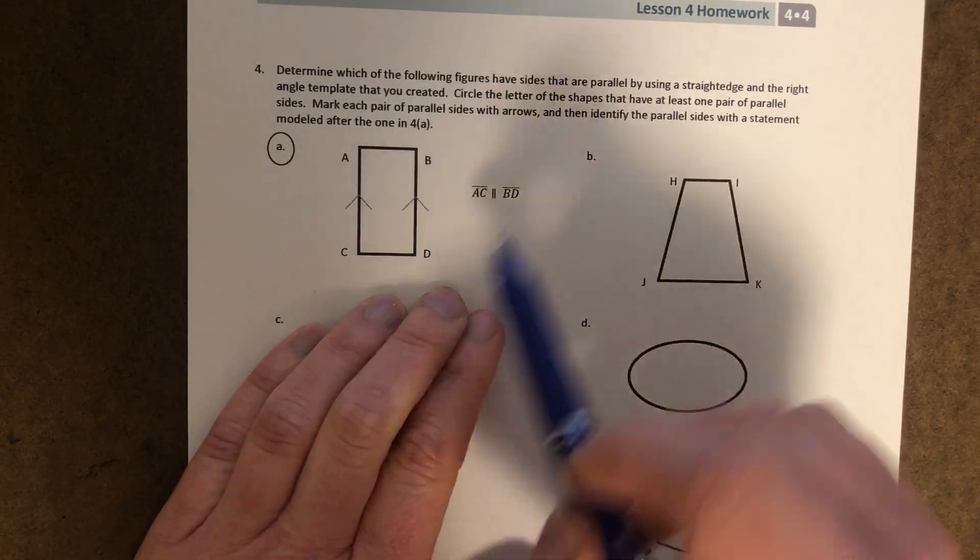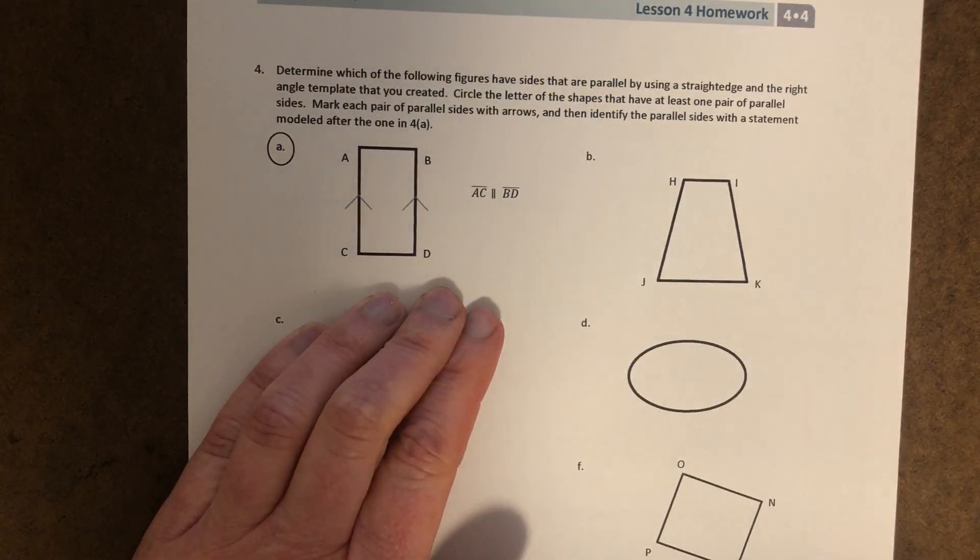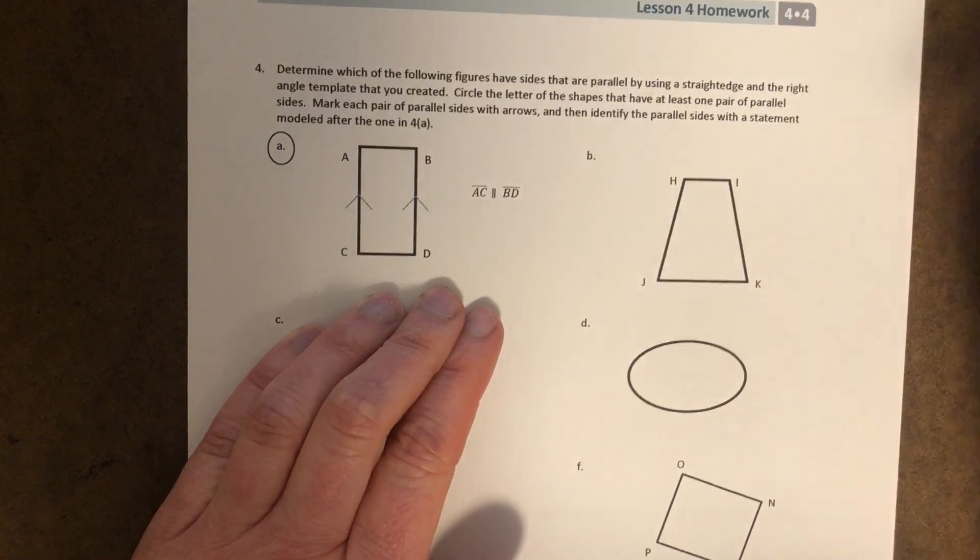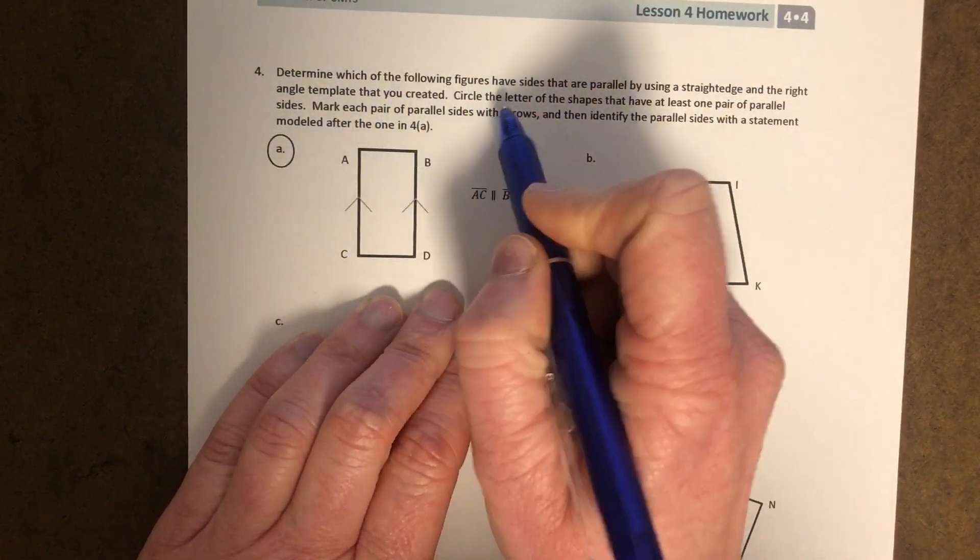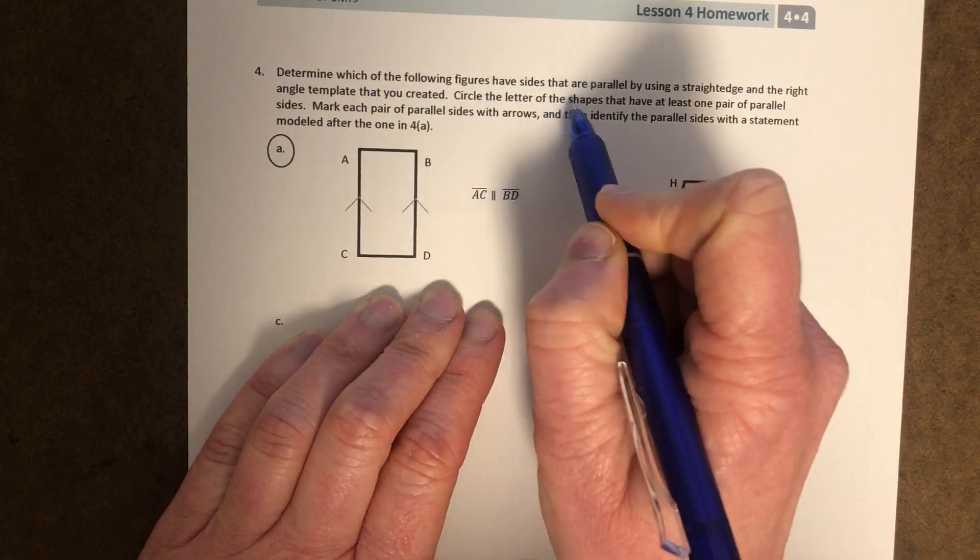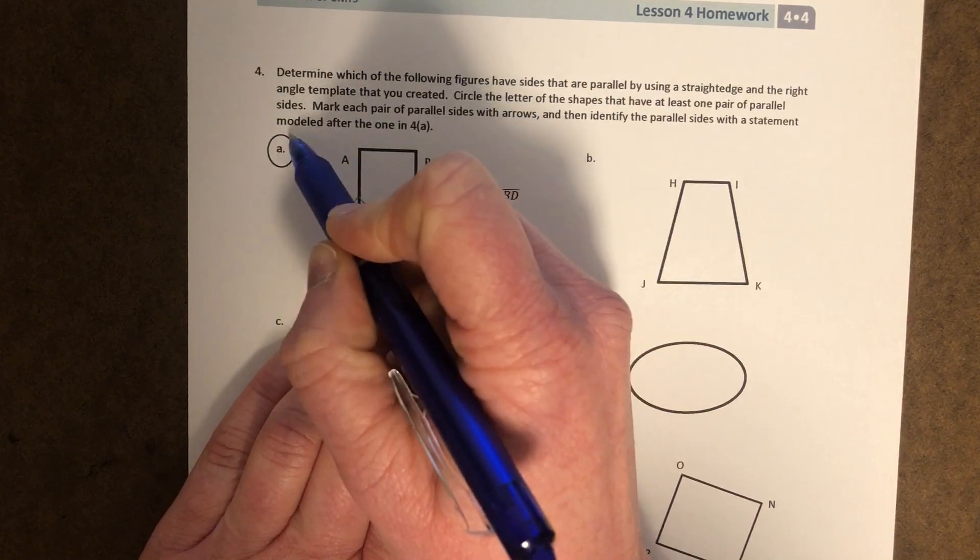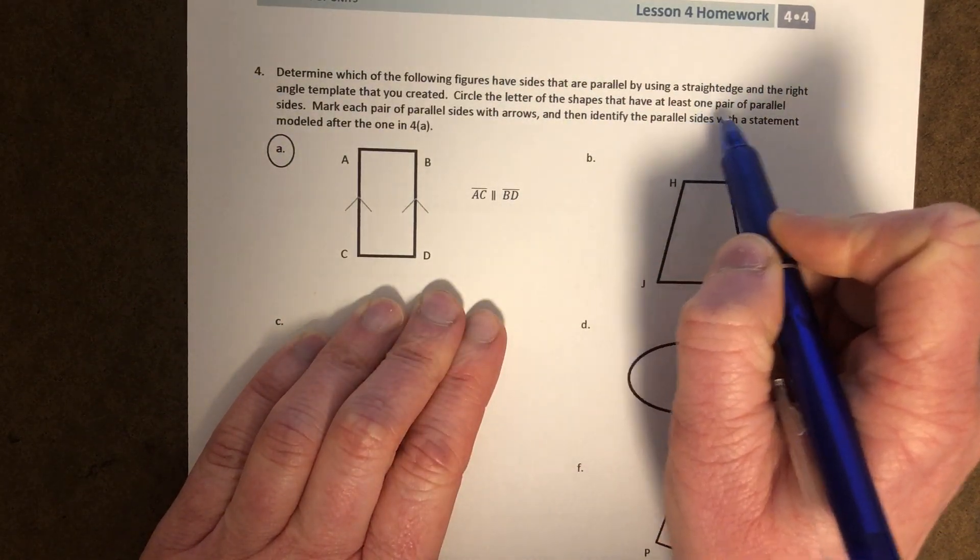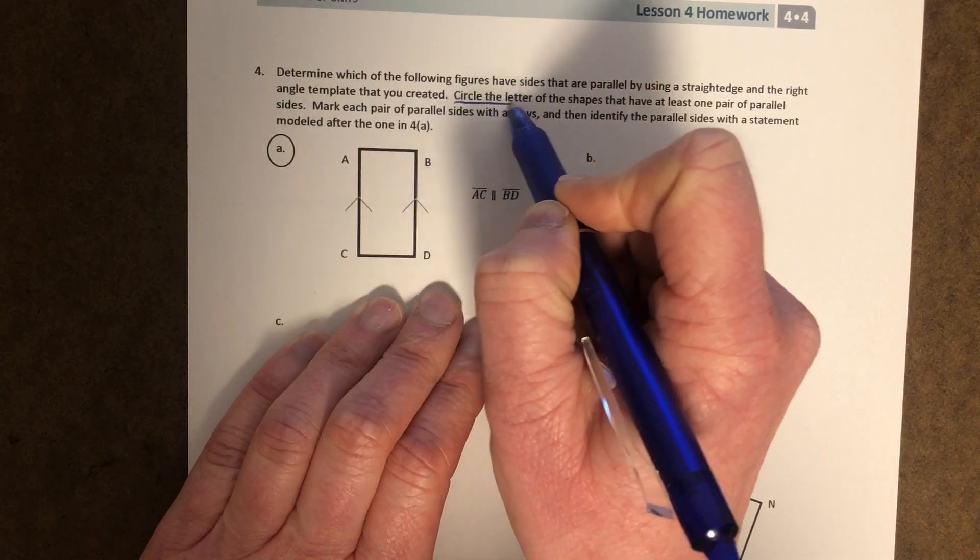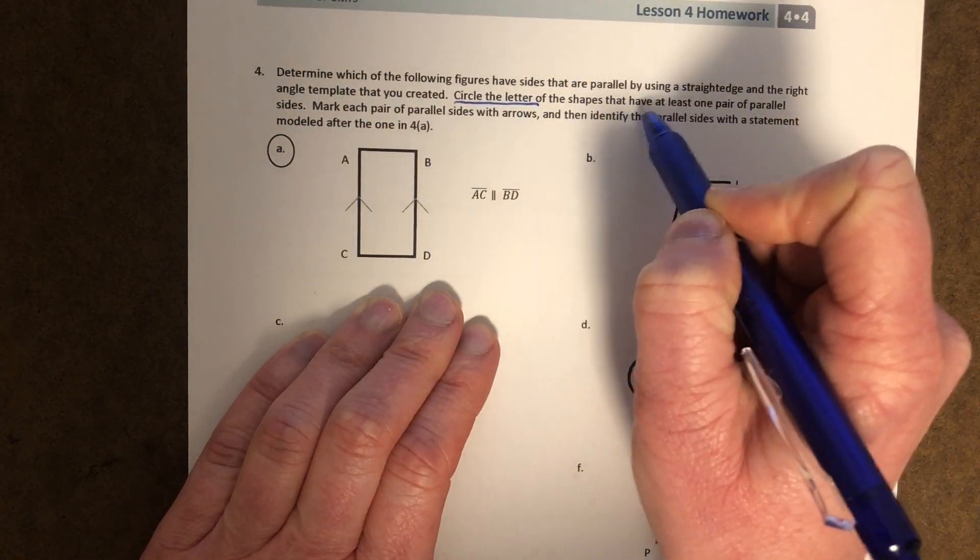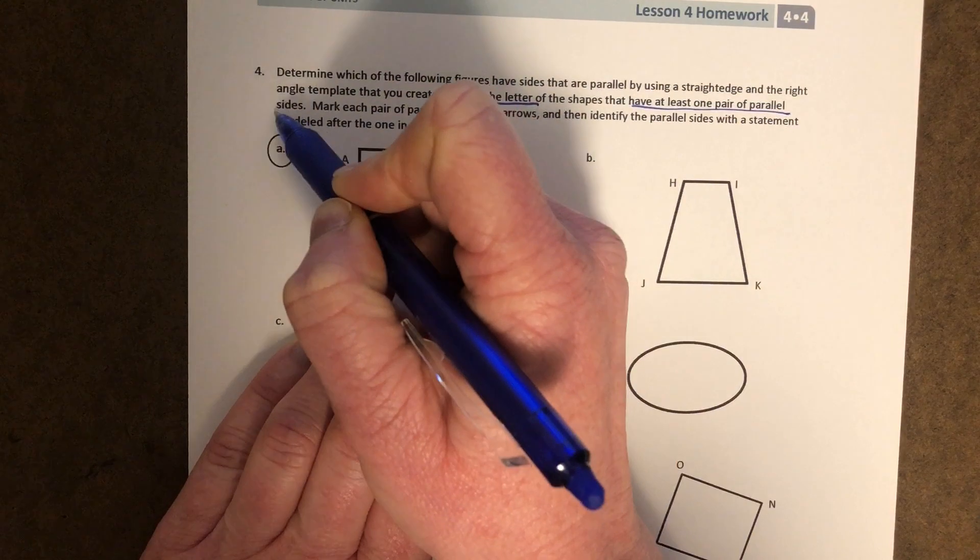So 4A has been done for us. So using a straightedge or your right angle template, we are going to circle the letter of the shape. They've circled the letter of the shapes that have at least one pair of parallel sides.